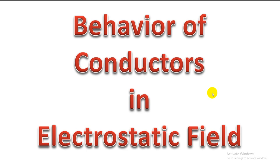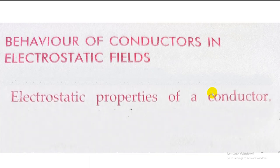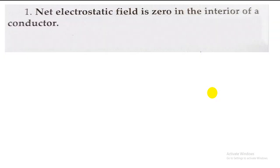Hello everyone, we are going to discuss the behavior of the conductor in an electrostatic field. You need to understand that when a conductor is kept in an electric field, there are some properties linked with the conductor. We are going to discuss those properties. The first property is: the net electric field is zero in the interior of a conductor.